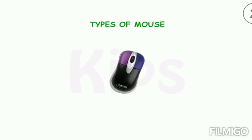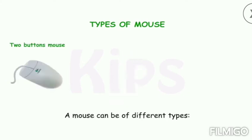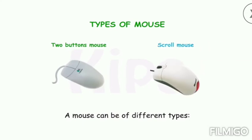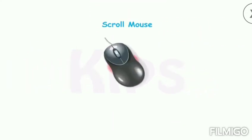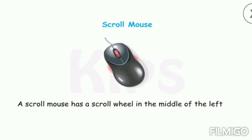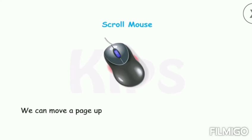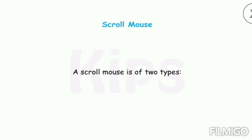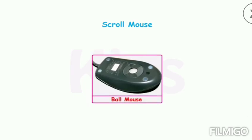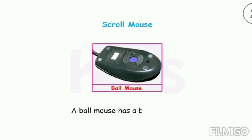A mouse can be of different types: a two-button mouse and a scroll mouse. A scroll mouse has a scroll wheel in the middle of the left and right buttons. We can move a page up and down by moving the scroll wheel.